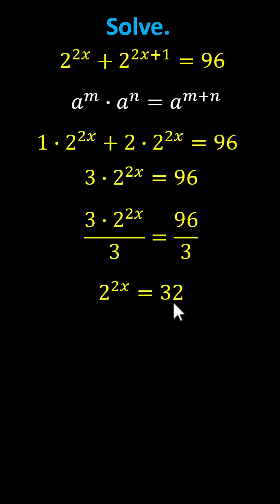From here we can write 32 using base 2. 32 is equal to 2 to the fifth.